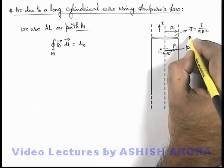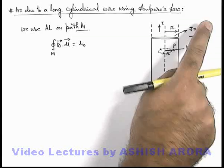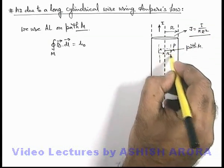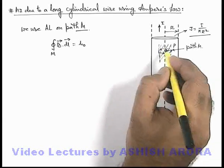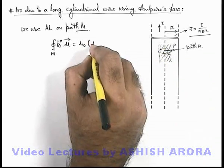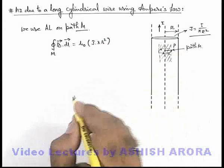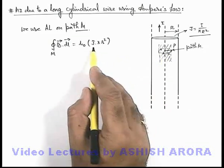As the current density in the cross section of this wire is I by π R², the total current which is flowing and it is enclosed within this closed path M can be written as J multiplied by π small r² because J is the current per unit area in the cross section, so for this path the current enclosed will be this.